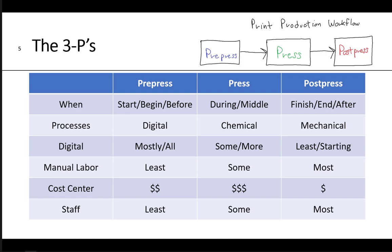In terms of manual labor, the least number of people are found in pre-press. There are some people in the press room, but the most employees in a plant are typically in post-press, in the bindery. In terms of financial cost centers, pre-press is in the middle, the press room is the most expensive, and post-press is the least expensive.